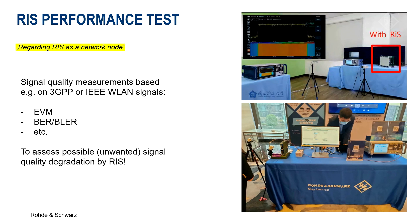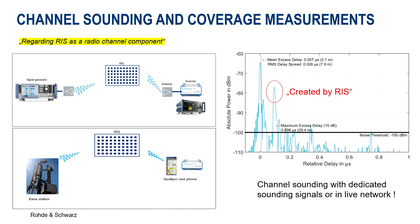This kind of RIS performance testing should be done in all kinds of target systems — for instance, in cellular systems according to 3GPP or Wi-Fi systems according to IEEE. Finally, we need to check the RIS in the field. Channel sounding is a way to check the wanted multipath creation by the RIS, or we need to test the coverage extension by the installed RIS using dedicated signal scanners or test phones.